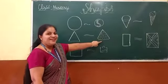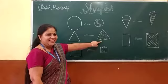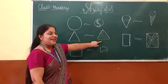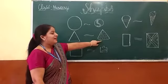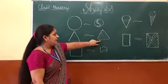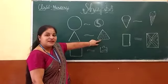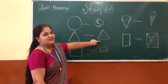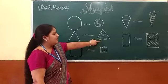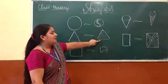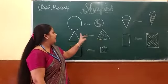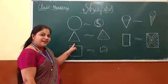And this is a? Very good students. This looks like a pizza — this is a pizza slice. Yummy yummy pizza slice. This looks like a triangle.